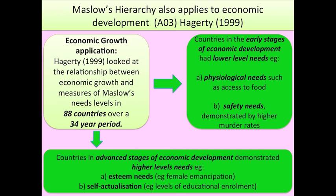Another strength of the humanistic approach is that Maslow's hierarchy can be applied to economic development as well as being a psychological theory. Hegarty (1999) looked at the relationship between economic growth and measures of Maslow's needs levels in 88 countries over a 34-year period. They found that countries in early stages of economic development had lower-level needs — physiological and safety needs, demonstrated by higher murder rates — whereas countries in advanced stages showed higher-level needs such as esteem needs like female emancipation, and self-actualisation demonstrated by high levels of educational enrolment.